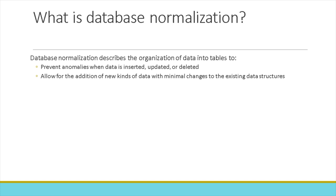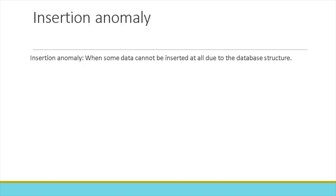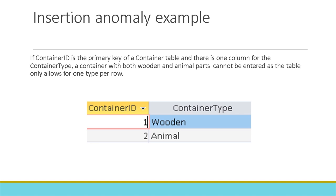An insertion anomaly occurs when some data cannot be inserted into the database at all due to the database structure. For example, if the container ID is the primary key of a container table and there is one column for the container type, a container with both wooden and animal parts cannot be entered, as the table only allows for one type per row.